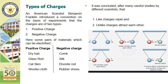American scientist Benjamin Franklin introduced a convention based on experiments that charges are of two types: positive charge and negative charge. Whenever there is rubbing between two insulating materials, one material loses some electrons and becomes positively charged due to a deficiency of electrons, whereas the second material, which gains those electrons, becomes negatively charged due to an excess of electrons.